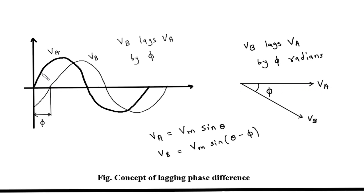In this waveform, the starting point is from 0 for Va, and for Vb it is from a different position. The difference between the starting points of Va and Vb is the phase difference, and phase difference is denoted by Phi.